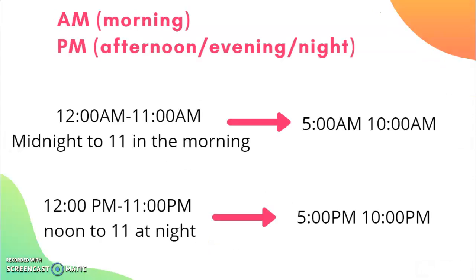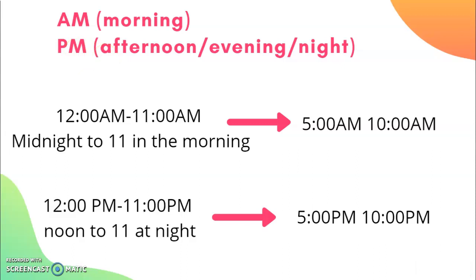Now we're going to talk about AM and PM. When I see AM — AM comes in the morning. So how do you pronounce the times? 12 AM to 11 AM.